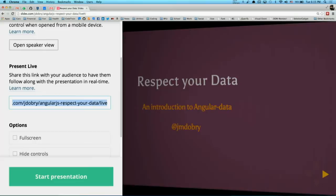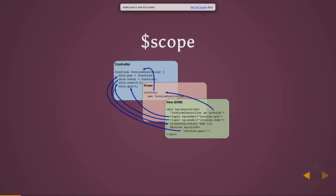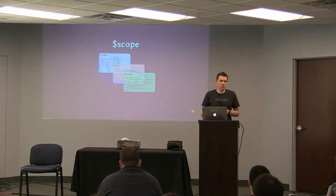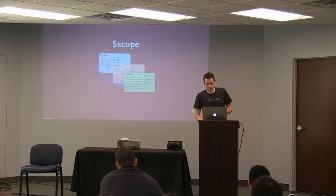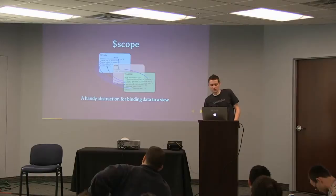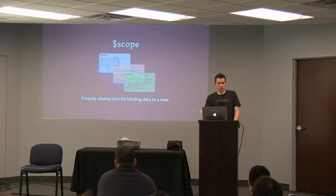So we're going to start from the beginning. You can go to that URL and it might flip your slides for you. It's slides.com/jdobri/angularjs-respect-your-data/live. Scope — for any of you who aren't familiar — is how the data in your JavaScript gets bound to the HTML, to your view. Angular will keep track of your data and as it changes, it will update your view. It's the two-way data binding that is all the rage among today's frameworks. Scope is really handy as an abstraction for getting your data into the view.